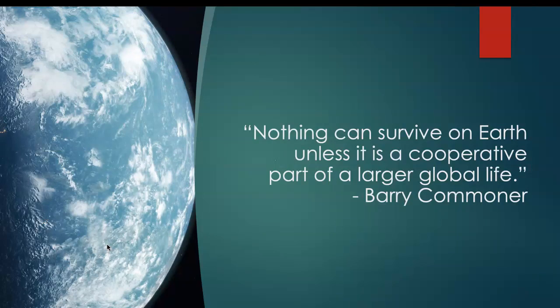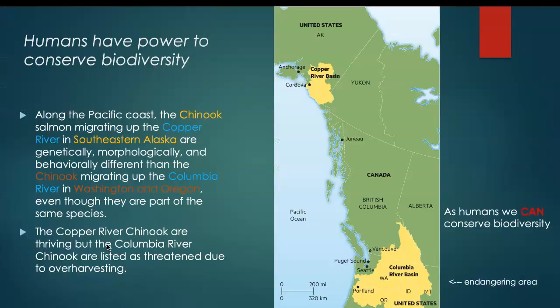Nothing can survive on earth alone unless it's part of the big picture. This is similar to the first concept when I talk about environmental science — everything is interrelated. Interrelatedness is a core concept of environmental science. And humans do have the power to conserve biodiversity. Some people say it's so bad, it's so messed up, there's nothing we can do — that is not true.